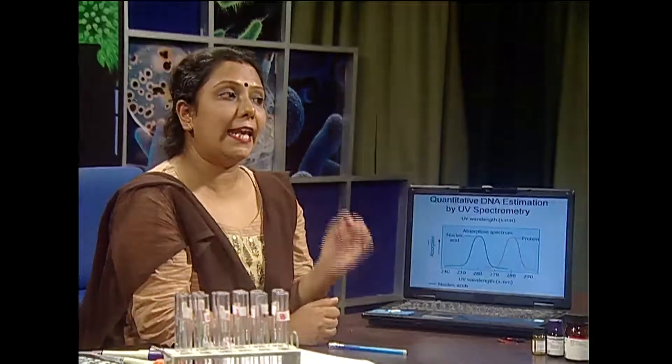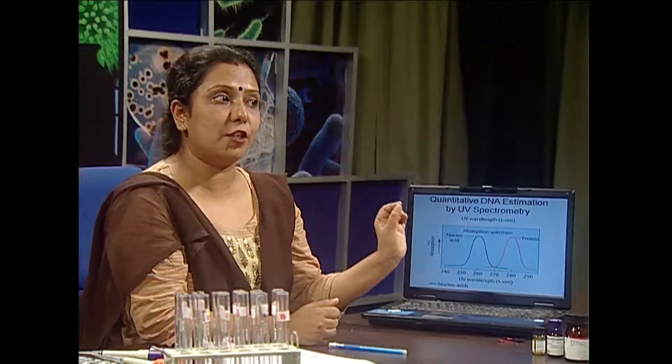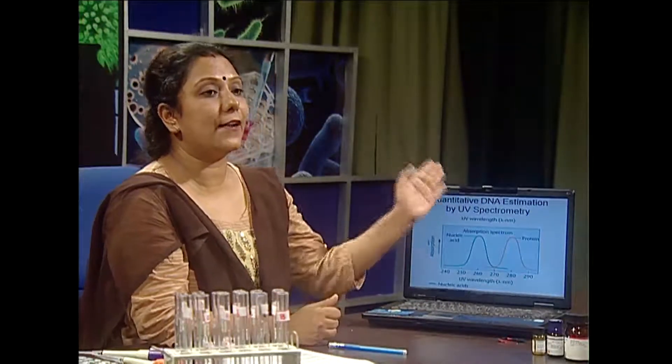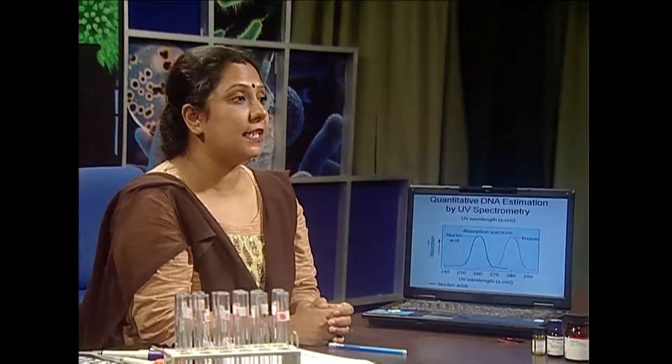So if you have any optical density observation from UV spectrometric method, by putting it in the formula you can calculate the amount of DNA present. In this way, the purity of the DNA is also checked during research purposes.